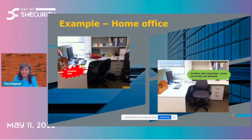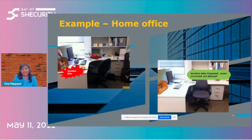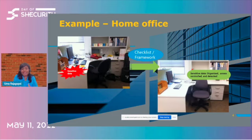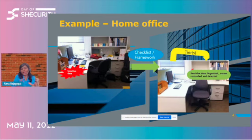What you want to achieve is a target state — a clean, organized desk where sensitive data is secured and locked, access is detectable before anything happens, and you have visibility into who is coming in. To get from the current state to that target state, you would use some kind of framework. For example, a framework might say: set aside 10 minutes every day to clean up, or work from left to right, top to bottom.